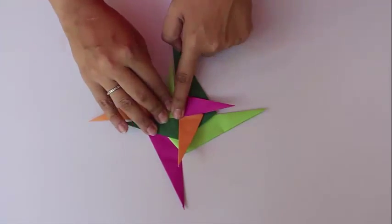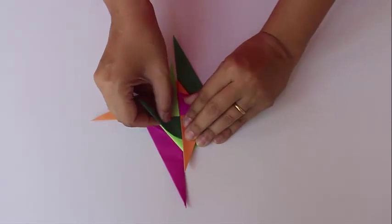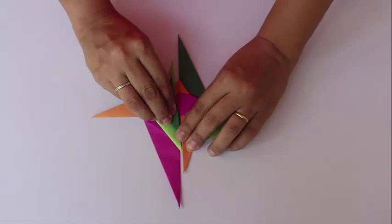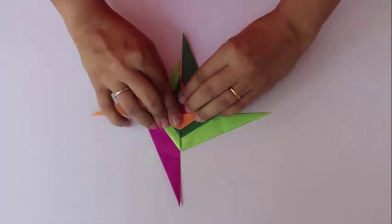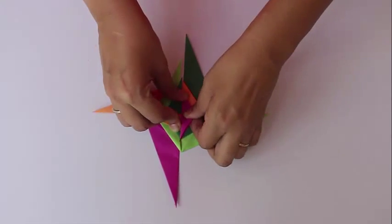This is the end of the first cycle. Similarly, we will keep folding them cyclically one after the other. At the end of each cycle, the size of the four blades of the windmill should be identical.